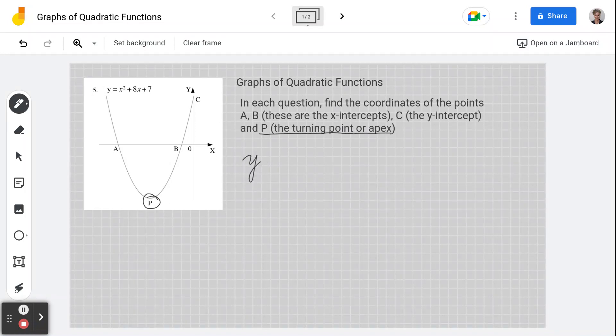Our graph's equation is y equals x squared plus 8x plus 7. We have to remember that our function, there's like a formula, and it's ax squared plus bx plus c.